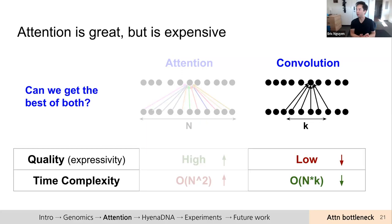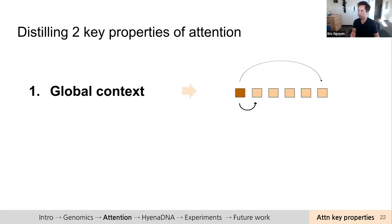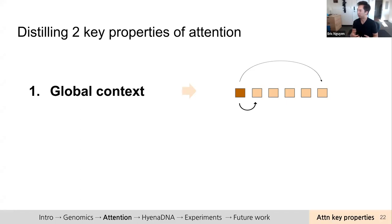In the original Hyena architecture work, which was focused on language, we asked: is there a way to get the best of both worlds — an expressive model that's much more computationally efficient? To do that, we distilled a couple of key properties of attention to essentially reverse-engineer what makes attention so powerful, but do so with operations that are much faster. The first property is global context. For each token in the sequence, it compares itself with every other token in a pairwise fashion, modeling different interactions in the data — that's a very powerful key thing that makes transformers so unique.